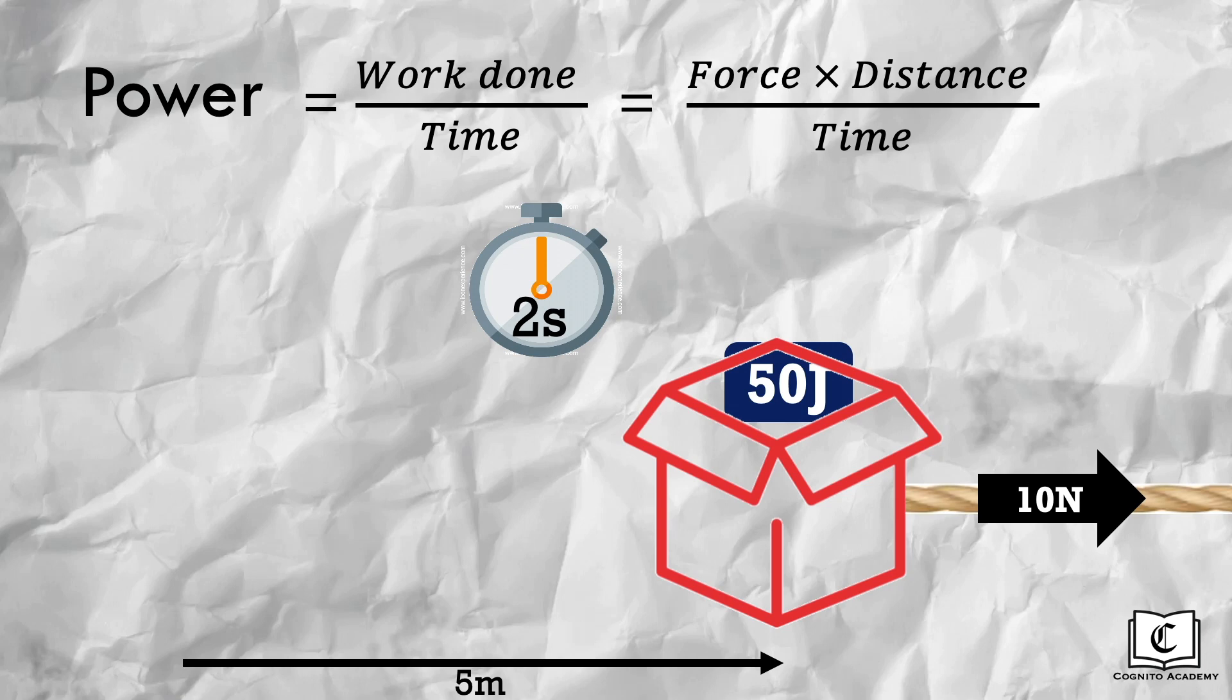We know that power is given by work done per unit time. Hence, we take the 50 joules of work done divided by 2 seconds, which gives us 25 watts of power by the string.